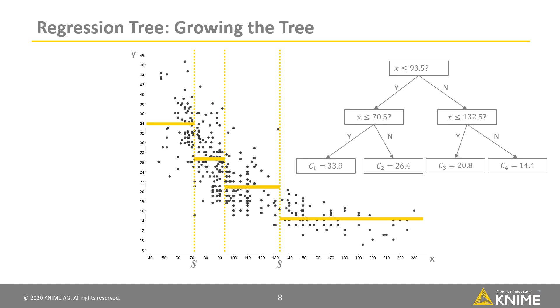Then we grow this tree by finding another boundary within each of the segments in the same way as for the previous split. We continue this process until we reach one of the stopping criteria.